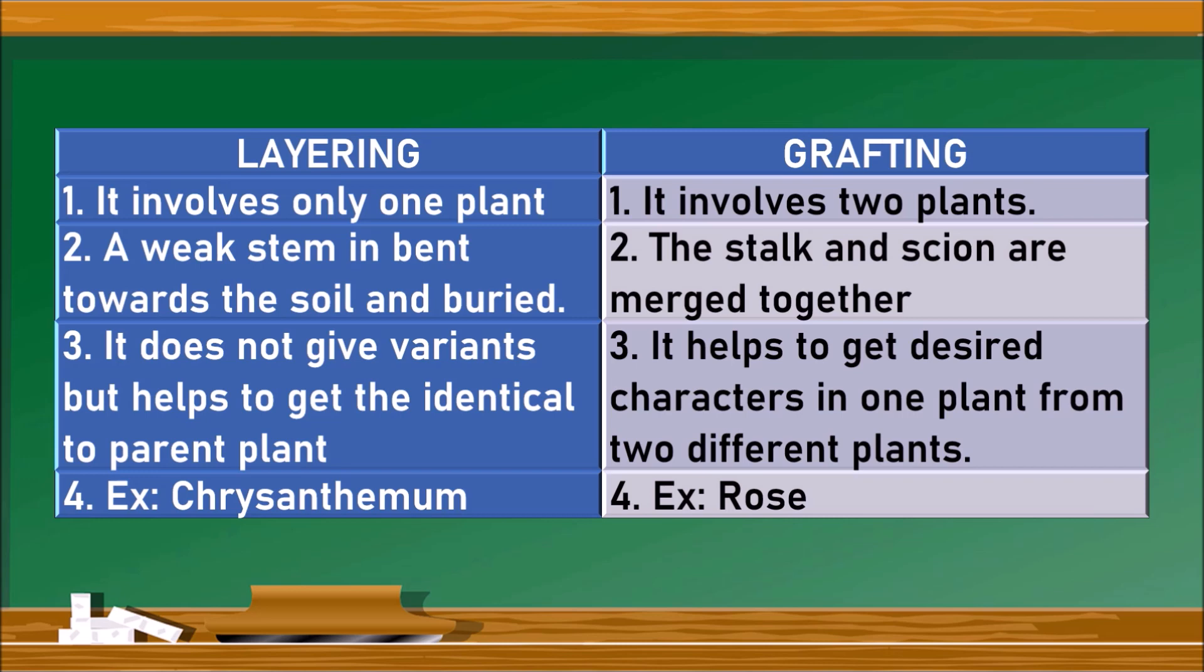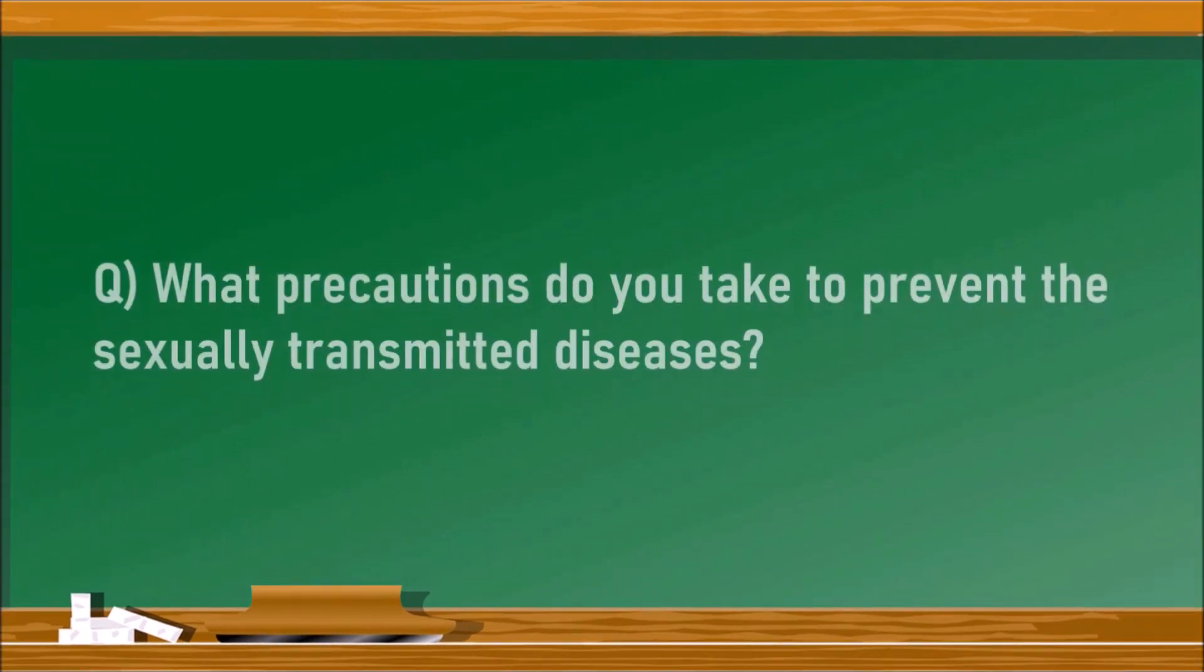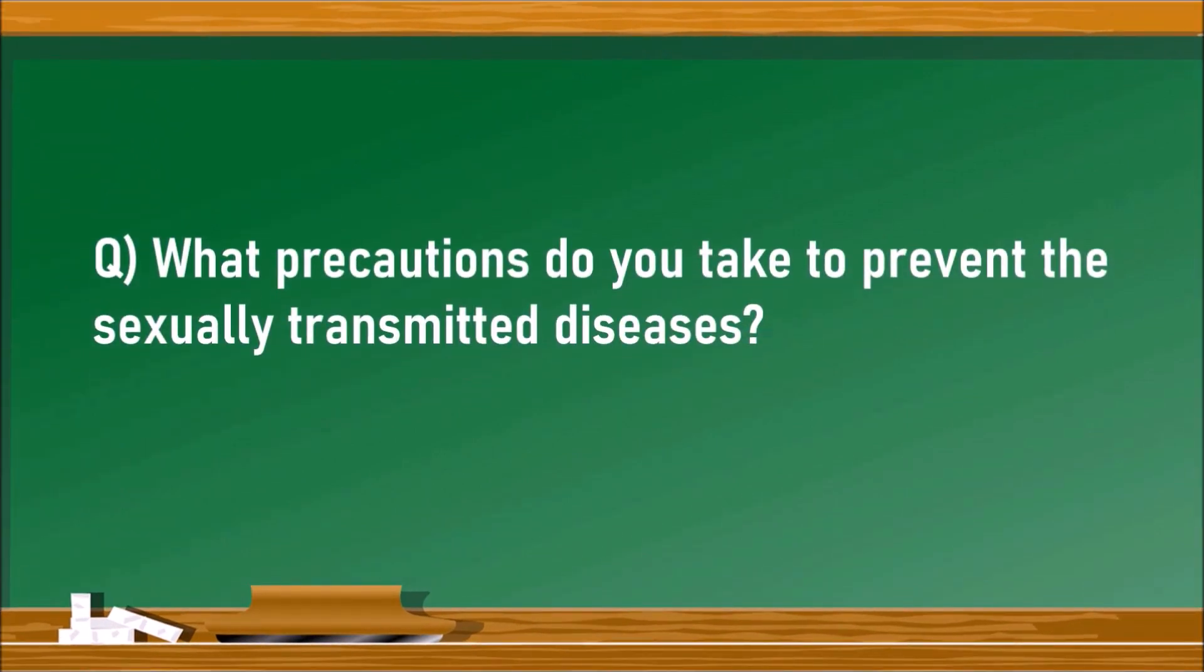If we have two desired characters in two different plants, we can get both of them in one plant by grafting. The example for layering is chrysanthemum, whereas the example for grafting is rose. Next question. What precautions do you take to prevent sexually transmitted diseases?